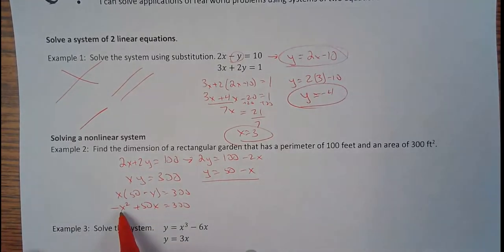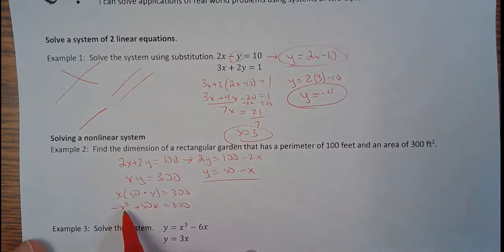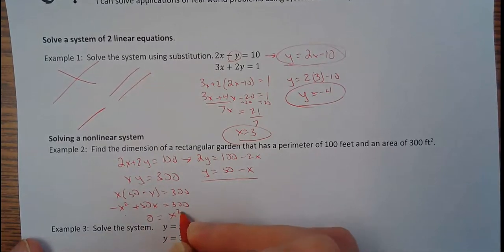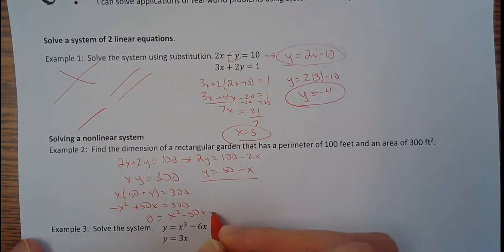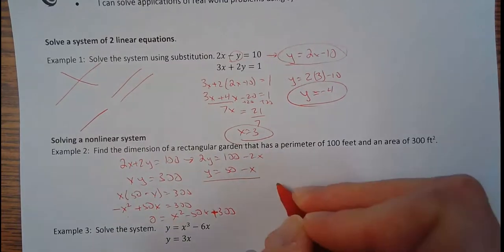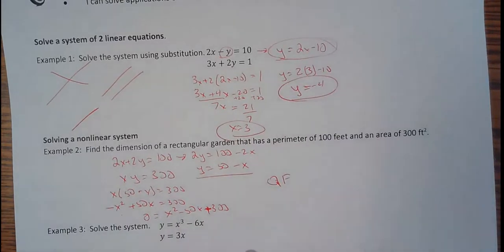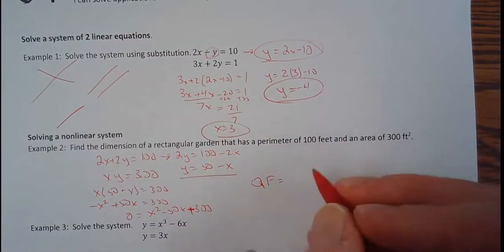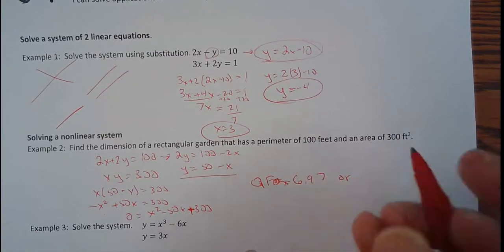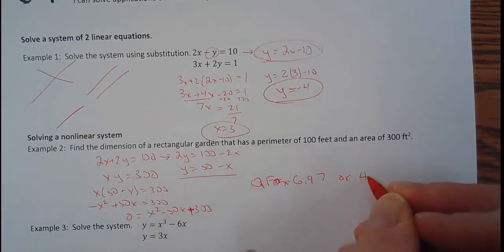And now I've got a quadratic. And to get a quadratic, I want everything on one side set equal to 0. So I'm actually going to rearrange that into the right side. That way, I have a positive x squared. So I'd have 0 equals x squared minus 50x plus 300. And that does not factor nicely. I think two numbers multiply to give you 300, add to give you negative 50. So plug it in the quadratic formula. Plug it in the quadratic formula, and you get two answers for x. You get 6.97 or x equals 43.03.